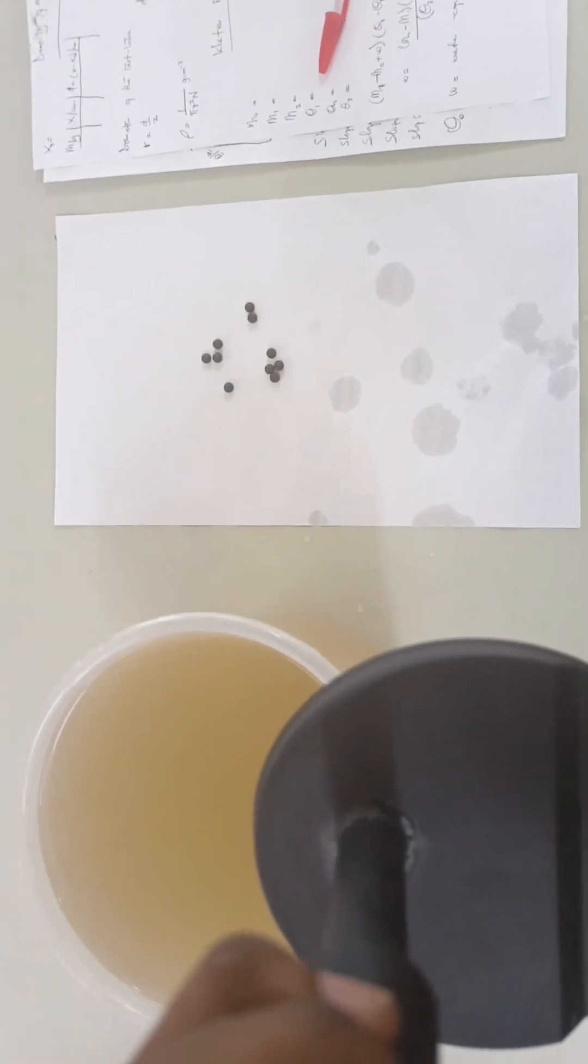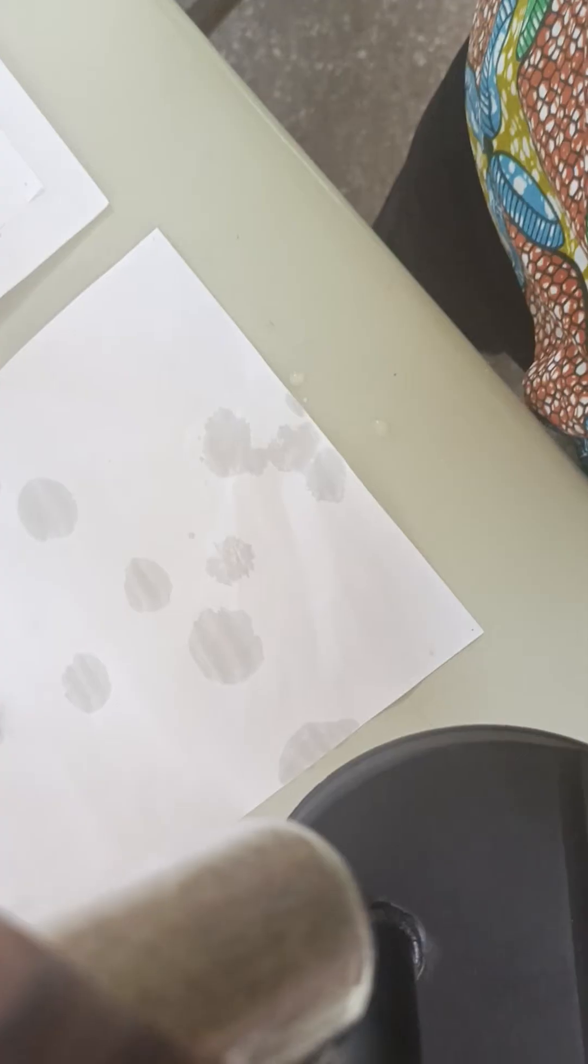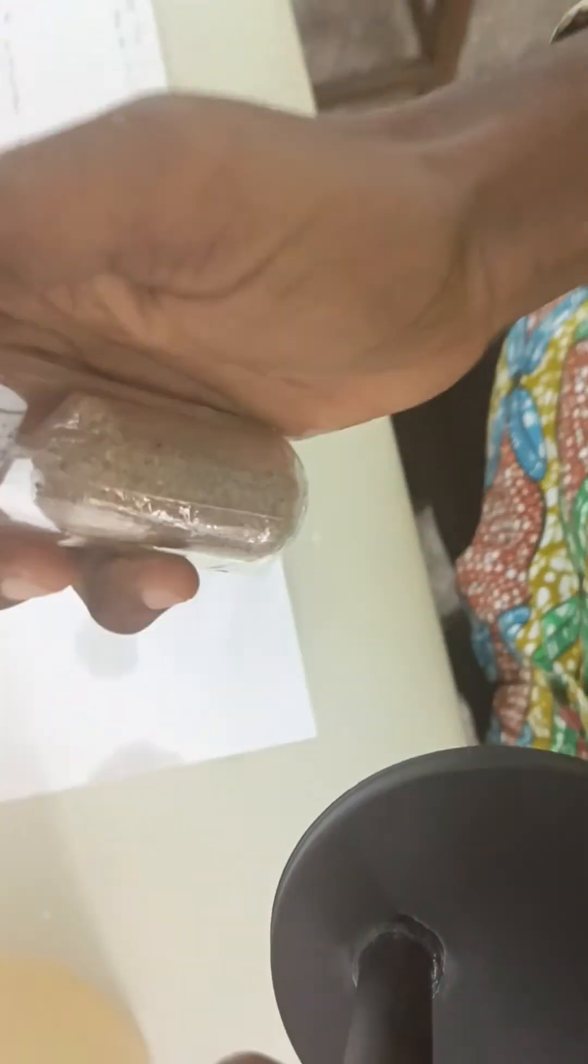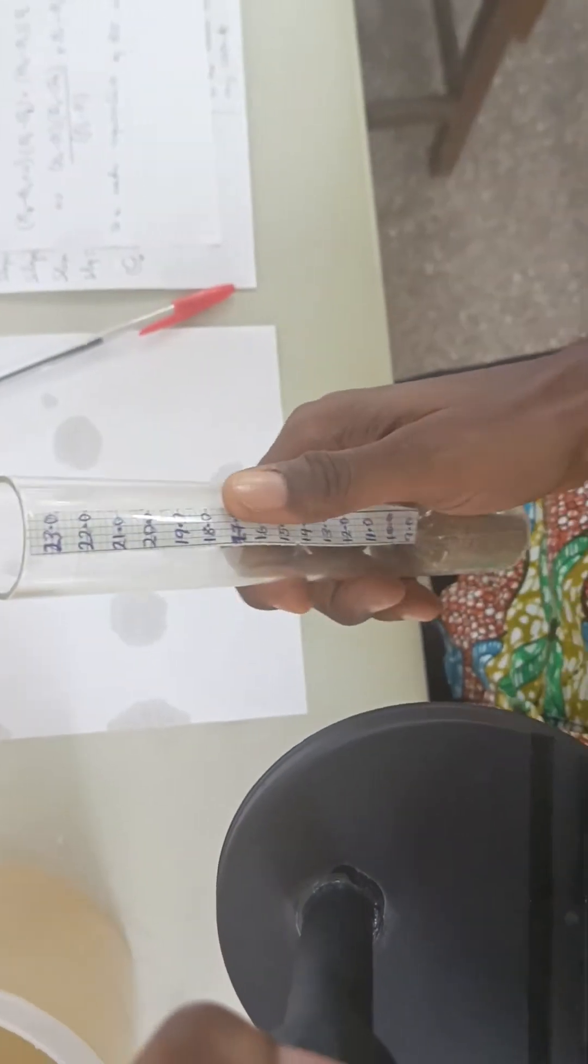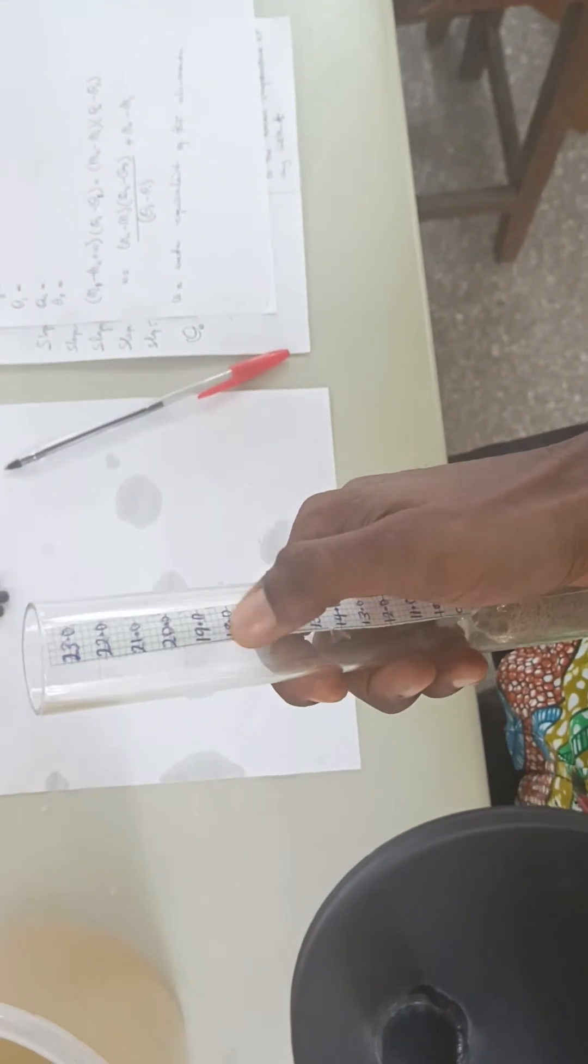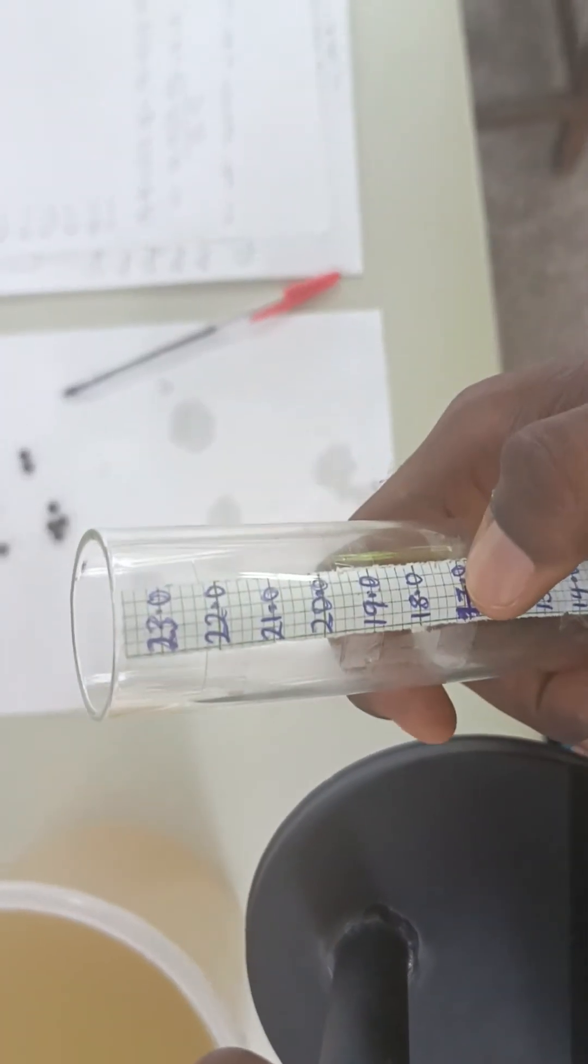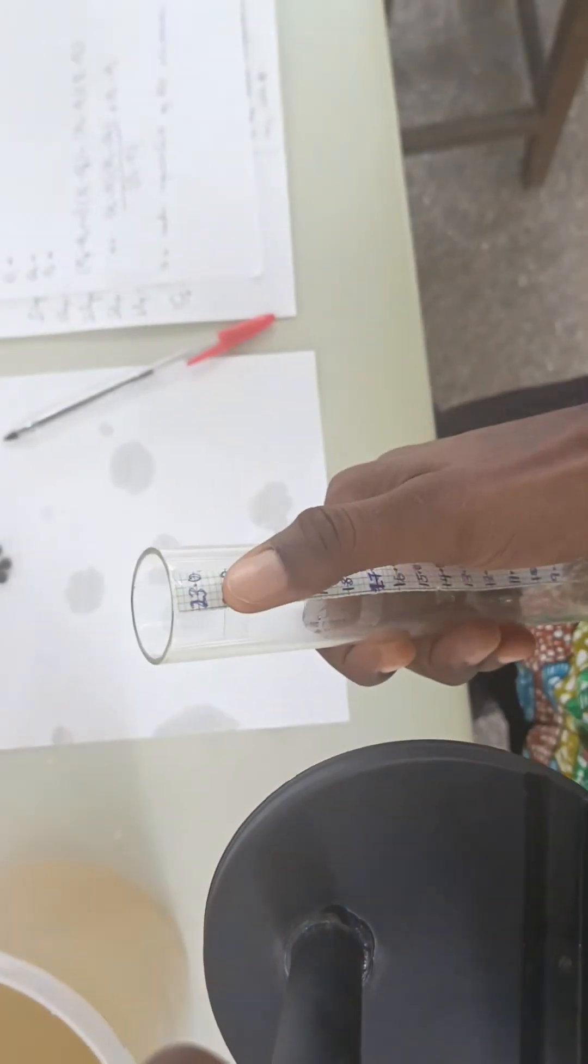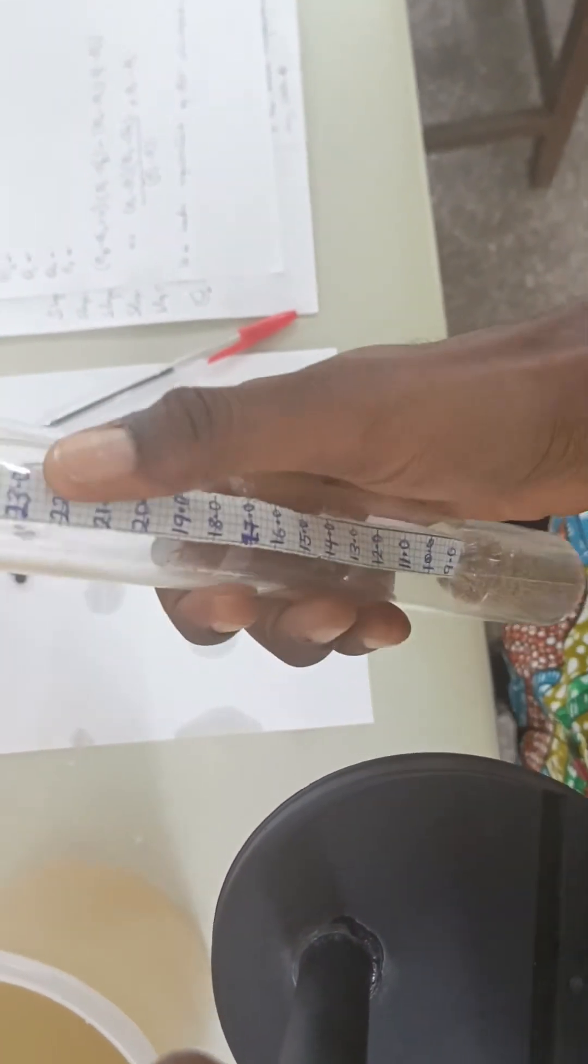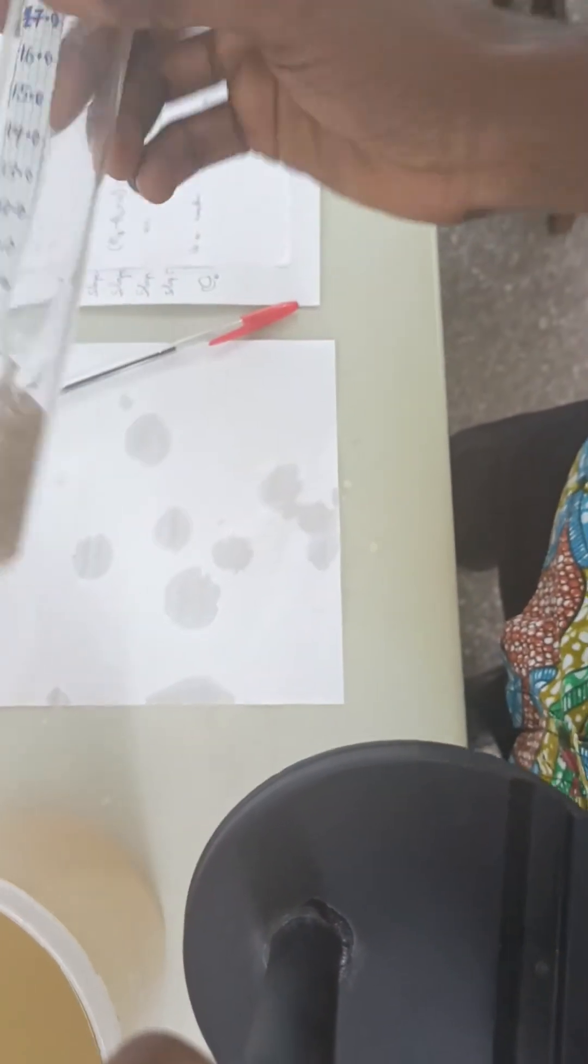You have the calibration on the test tube. This is the calibration on the test tube, so it's just one centimeter per box.